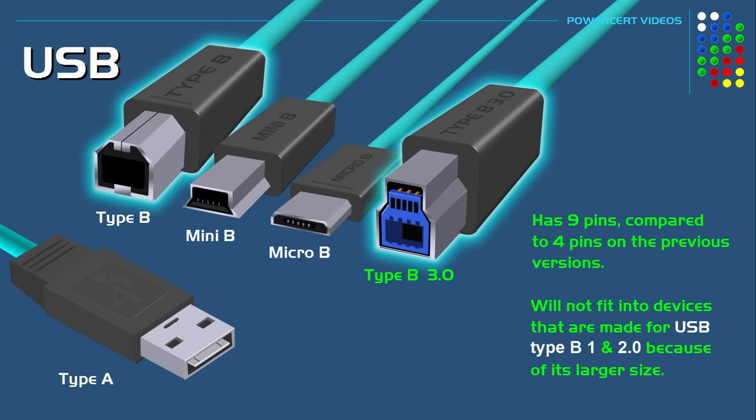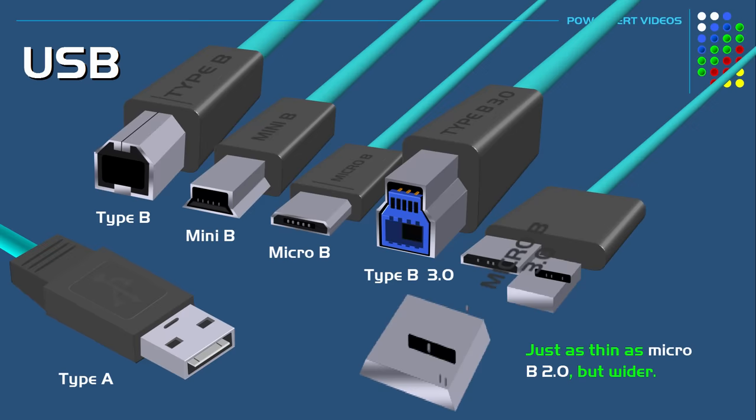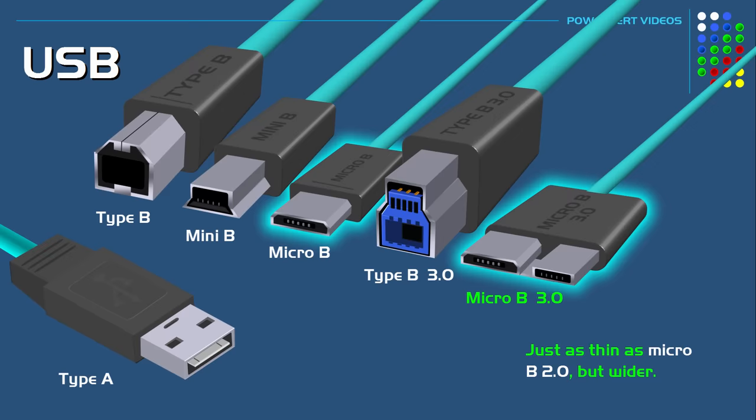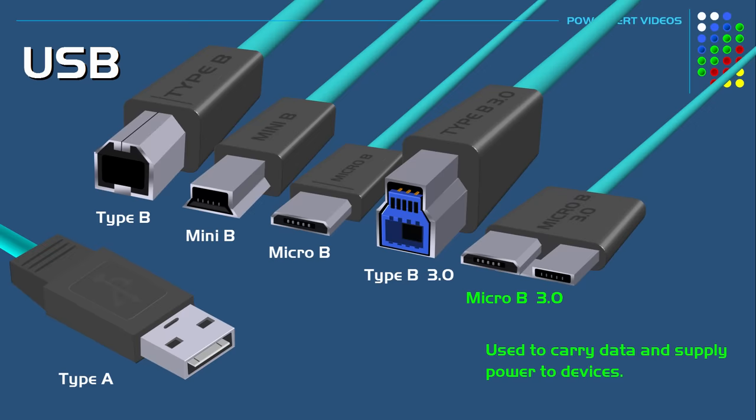There is also the USB 3.0 Micro-B. This connector is just as thin as the 2.0 version, but it's wider. It's basically a USB 2.0 Micro-B connector with five additional pins stacked on the side, which doubles the width of a 2.0 Micro-B. This connector is used to carry data and supply power to devices such as modern external hard drives.